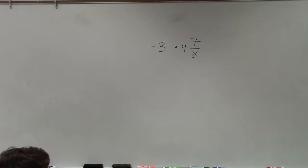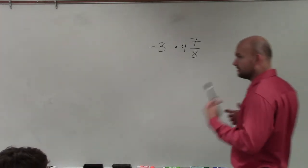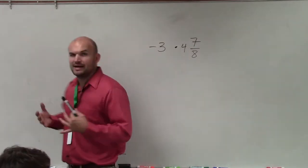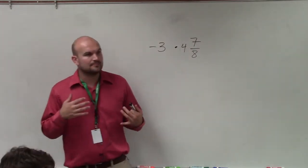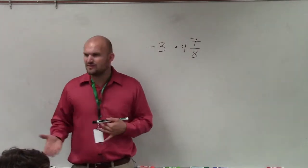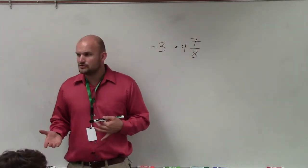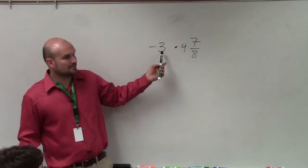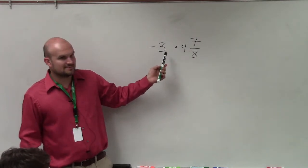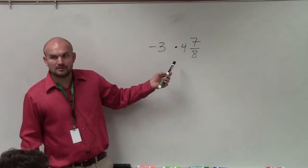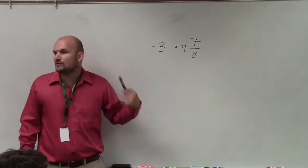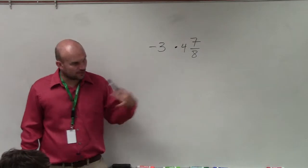So to do a problem like this, basically what we were talking about was multiplying fractions times fractions. Here I've thrown a mixed number times a whole number. So how is this going to relate to exactly fractions by fractions?